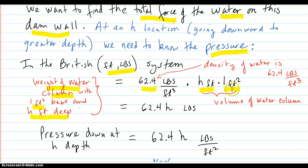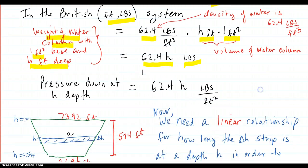And all the units work out, cancel out, and end up with pounds. So the weight of the water column down at depth h is 62.4h. And the pressure down there is defined as that weight in pounds per square foot. So 62.4h pounds per square foot.